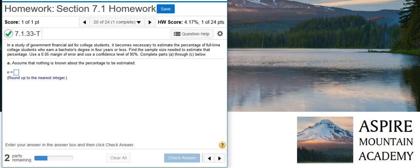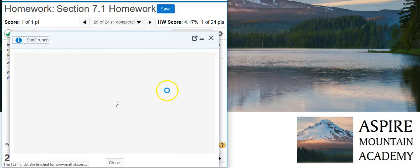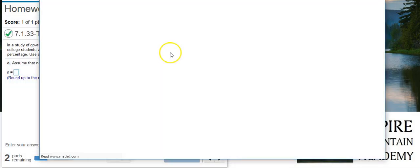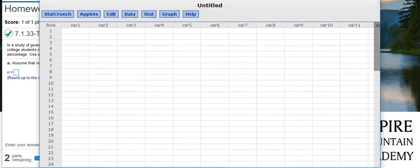Part A says assume that nothing is known about the percentage to be estimated. Well, to solve this problem, there is a sample size estimator inside StatCrunch. So let's pull up StatCrunch. I don't think it'll be much use to us because it actually requires us to know the standard deviation of our sample size, and there's nothing about standard deviation in our problem statement. So that option in StatCrunch isn't all that useful to us.